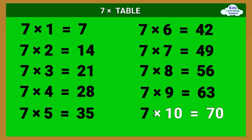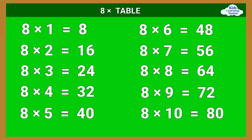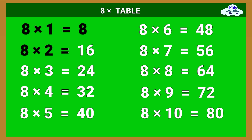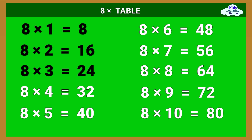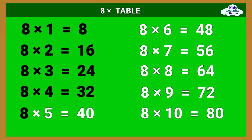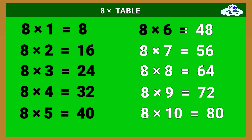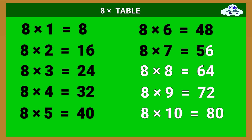7 times 10 equals 70. 8 times table: 8 times 1 equals 8, 8 times 2 equals 16, 8 times 3 equals 24, 8 times 4 equals 32, 8 times 5 equals 40, 8 times 6 equals 48, 8 times 7 equals 56.